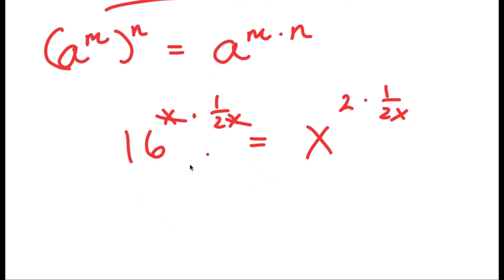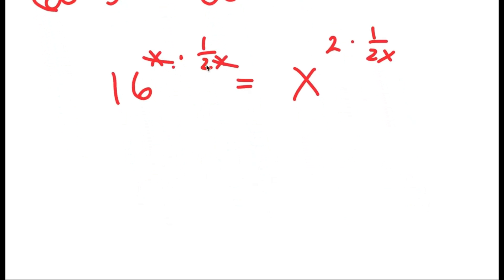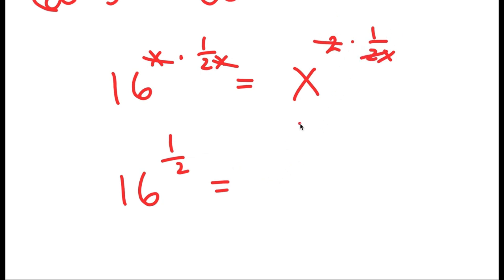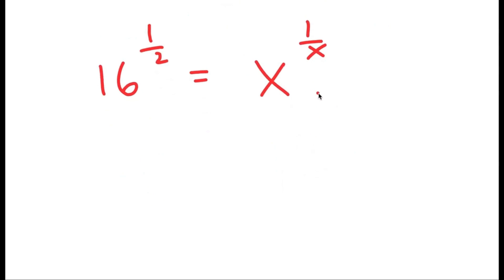The x and x cancel out on the left-hand side because they multiply out. So I'm left with 16 to the power of 1 half on my left-hand side. And for my right-hand side, the 2s cancel out, so I'm left with x to the power of 1 over x. Now my goal is to turn the left side to be in the form some number to the power of 1 over that number, so we can make that number our solution.